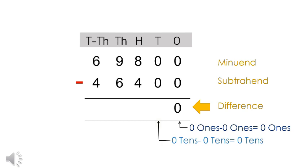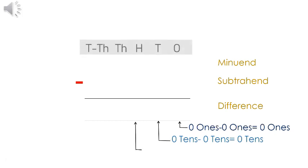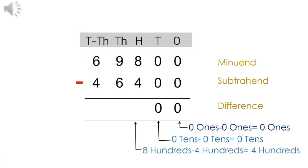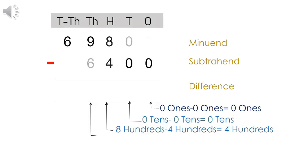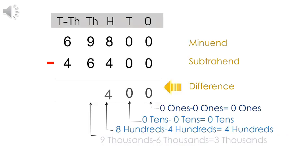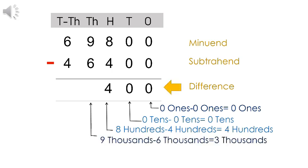Subtracting the hundreds column: eight hundreds minus four hundreds equals four hundreds. Write four in the hundreds column. Subtracting the thousands column: nine thousands minus six thousands equals three thousands. Write three in the thousands column.